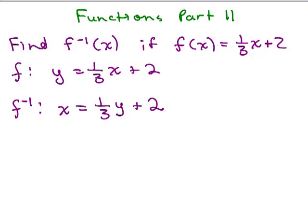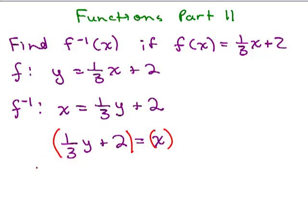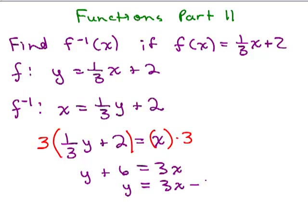Now we need to get it back in function notation by solving for y. Rewriting as one-third y plus 2 equals x, I'll multiply both sides by 3 to eliminate the fraction. Three times one-third y gives us y, and 3 times 2 is 6. So we have y plus 6 equals 3x. Subtracting 6, we get y equals 3x minus 6.